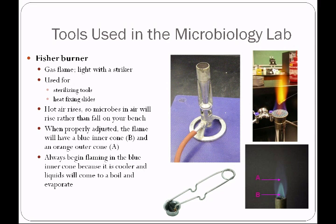You are going to learn how to flame reusable loops and needles. You're always going to begin flaming in the blue inner cone because it's cooler, so liquids will come to a boil more slowly and evaporate. If you stick it immediately into the hotter area of the flame, liquids come to a boil so fast they actually splatter off of the loop or needle and can contaminate the area.